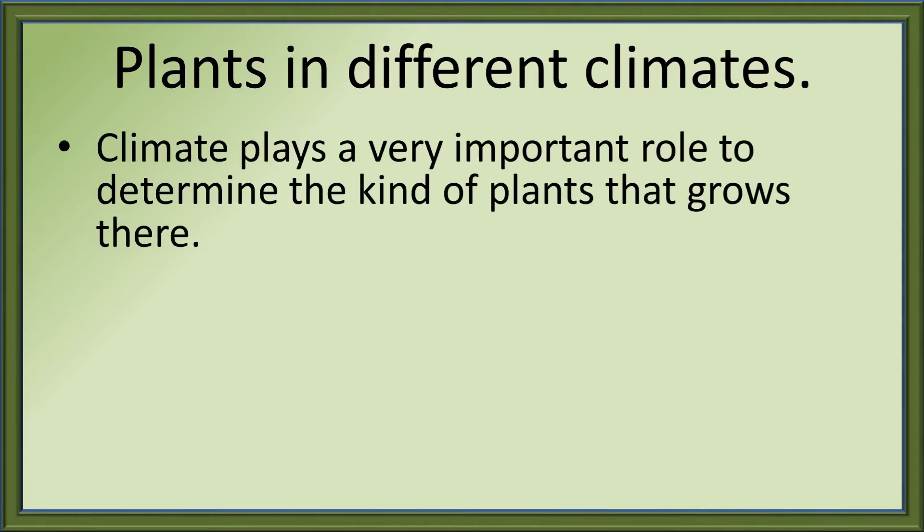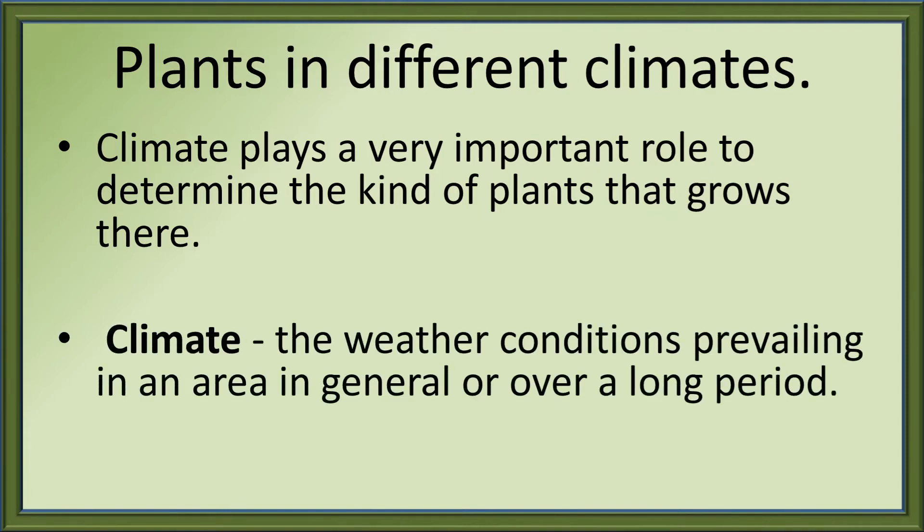Climate plays a very important role to determine the kinds of plants that grow there. What is climate? Climate is the weather conditions prevailing in an area in general or over a long period. Example: cold wet climate.